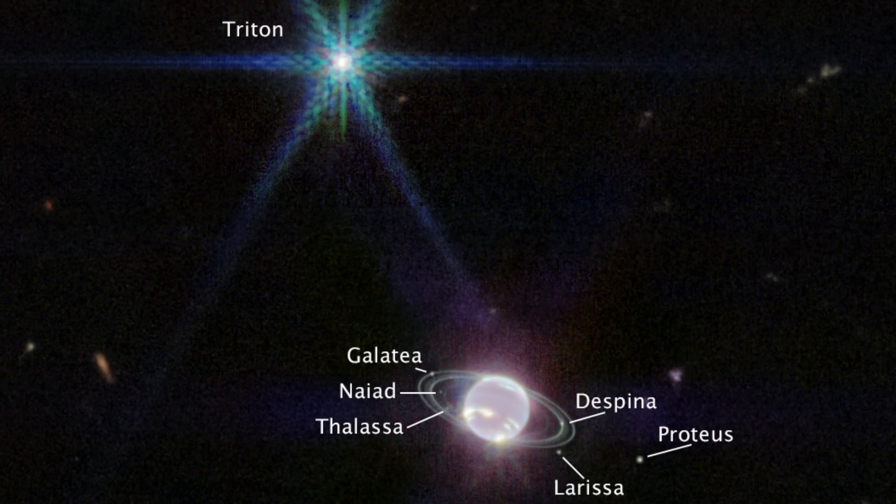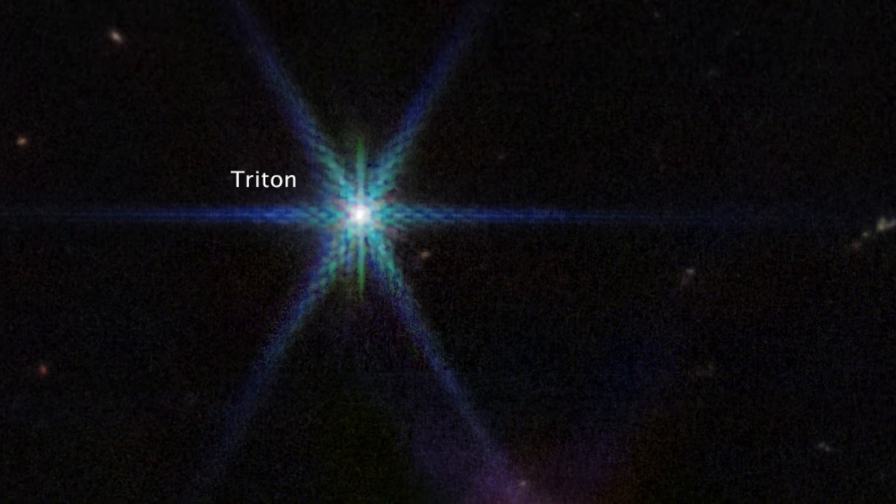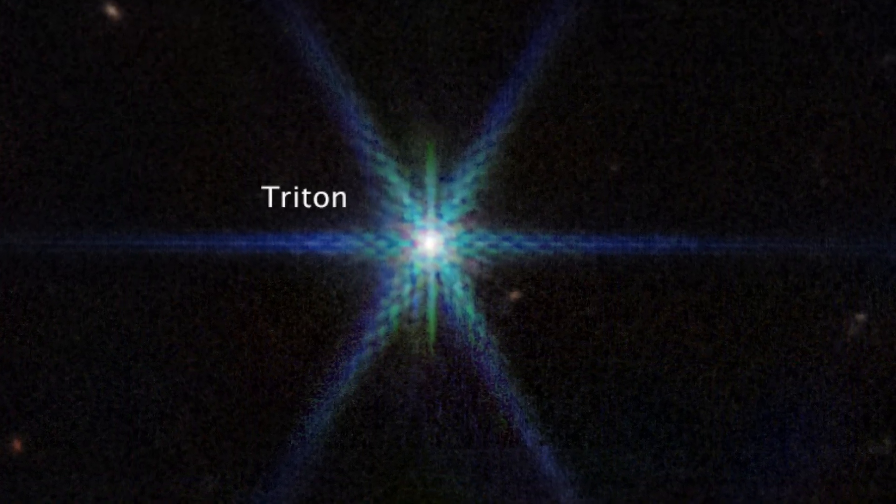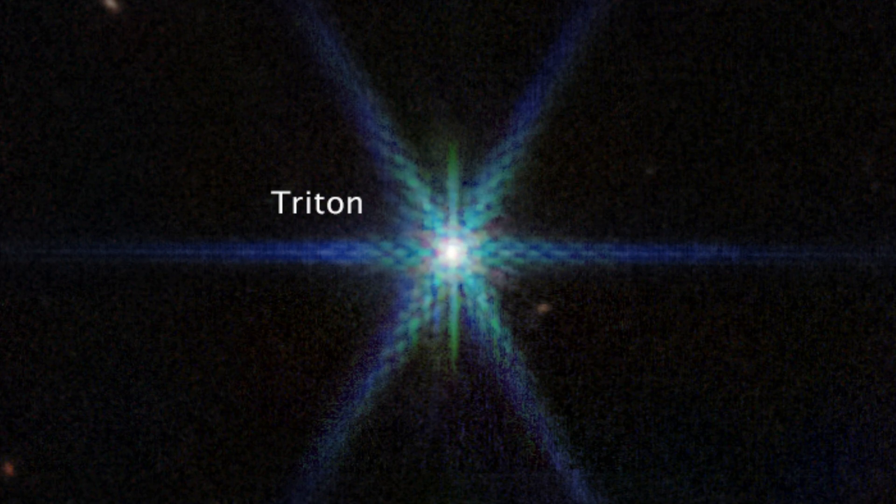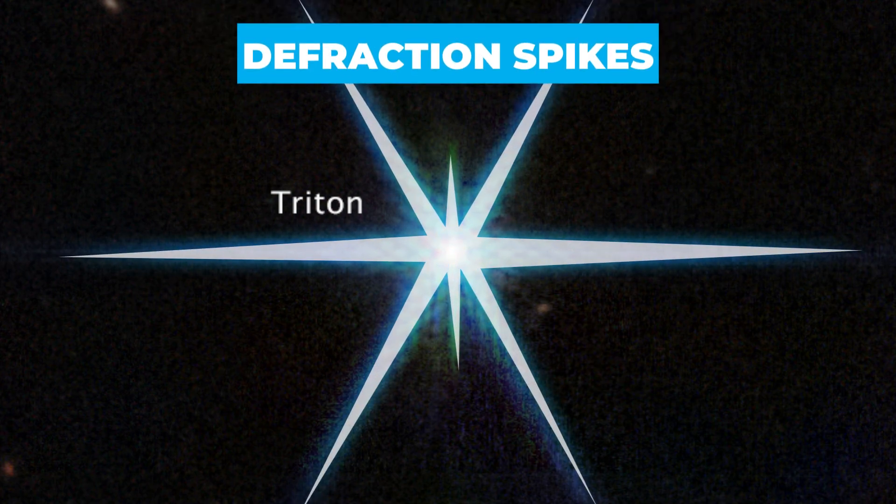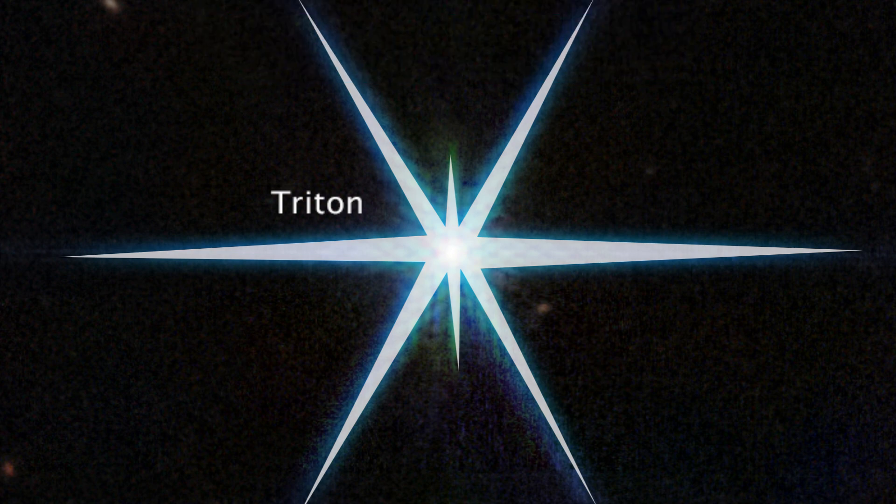Of particular interest is Triton, Neptune's largest and most distinctive moon, which stands out as a bright point in the image. Triton displays the characteristic diffraction spikes, or lines that radiate from bright light sources, creating the starburst or sun star effect in photos commonly seen in Webb's images.